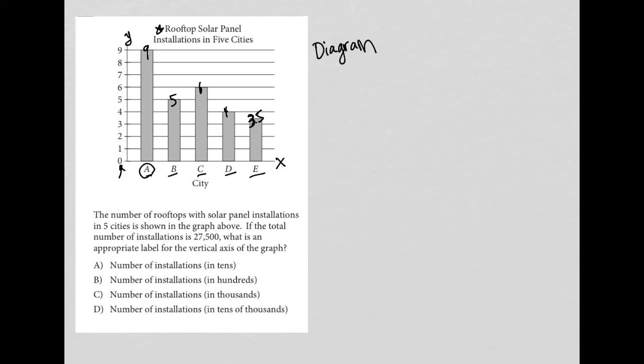So let's read the actual word problem now. The number of rooftops with solar panel installations in five cities is shown in the graph above. If the total number of installations is 27,500, I like to write down any time I find quantitative information in the word problem. So 27,500.